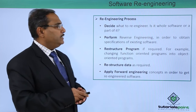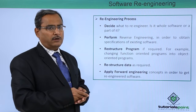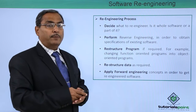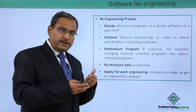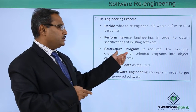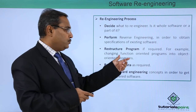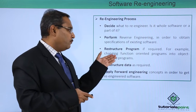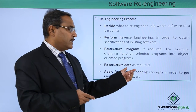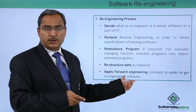Now let us go through the re-engineering process. First, decide what to re-engineer — the whole software or part of it. Then perform reverse engineering to obtain the specifications of the existing software. Restructure the program if required — for example, changing function-oriented programs into object-oriented programs. Then restructure data as required and apply forward engineering concepts to obtain the re-engineered software version.